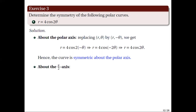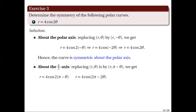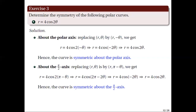Testing symmetry about the phi over 2 axis by making the following replacement, we get r equal to 4 cosine 2 times the quantity pi minus theta. This is equivalent to r equal to 4 cosine of the quantity 2 pi minus 2 theta. Since cosine is a periodic function, this is also equivalent to r equal to 4 cosine of negative 2 theta. Using the property that cosine is an even function, this is equivalent to r equal to 4 cosine 2 theta. Hence, the curve is also symmetric about the phi over 2 axis.